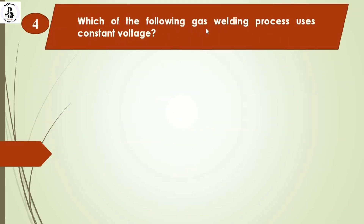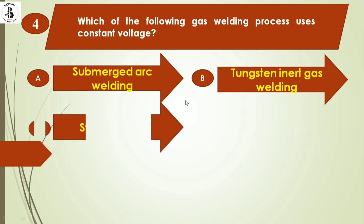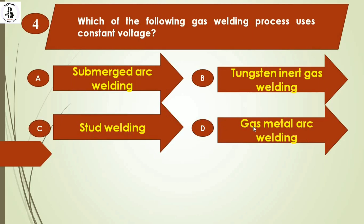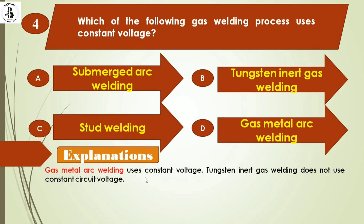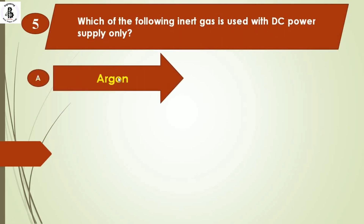Next question: which of the following welding processes uses constant voltage? Option A: submerged arc welding. Option B: TIG welding. Option C: stud welding. Option D: gas metal arc welding. TIG welding does not use constant circuit voltage. The process that requires constant voltage is MIG welding, also called gas metal arc welding. So the right answer is option D.